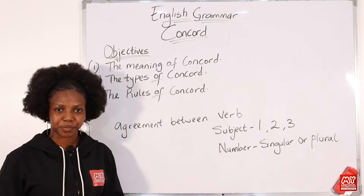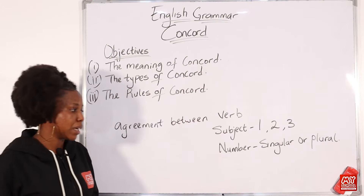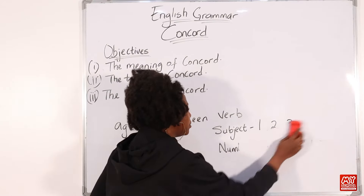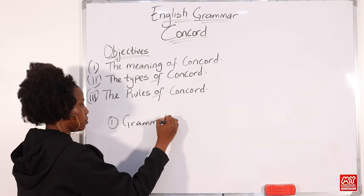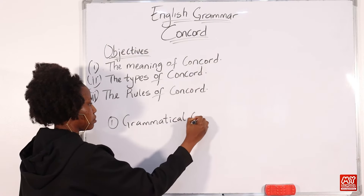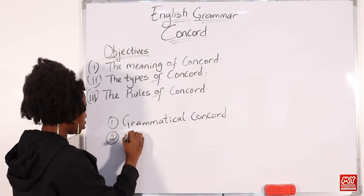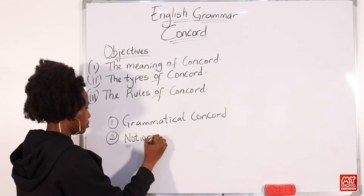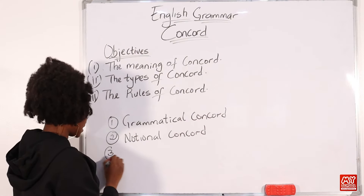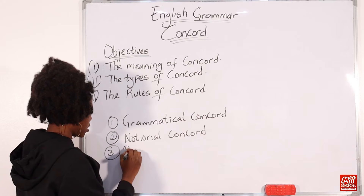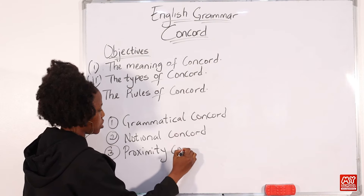Now let's move to the next item: the types of Concord. Three types of Concord have been identified by scholars: number one, grammatical Concord; number two, notional Concord; and lastly, proximity Concord.